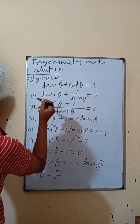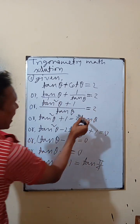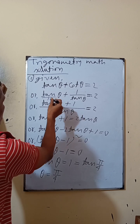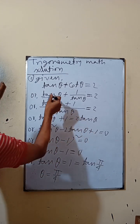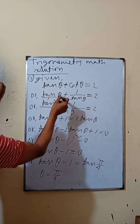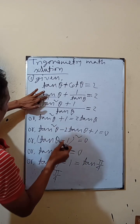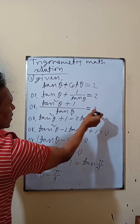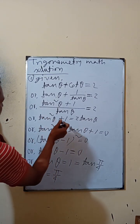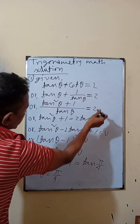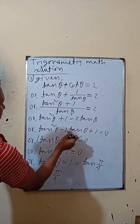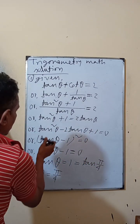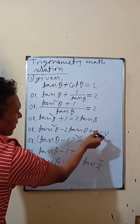Suppose we take the LCM of tan theta. Tan theta times tan theta is equal to tan theta. As compared, tan theta is equal to tan theta, and tan theta minus tan theta is equal to tan theta, every plus v squared.